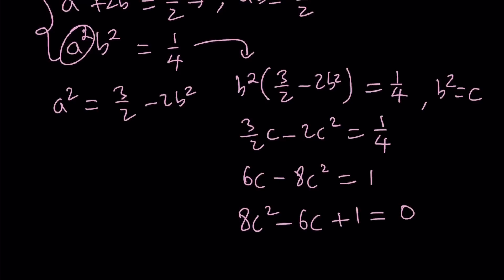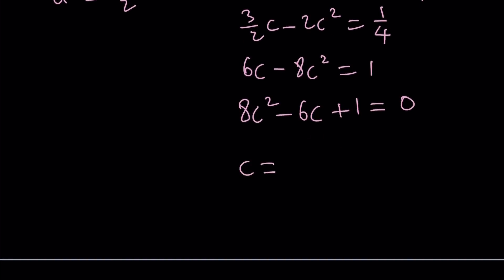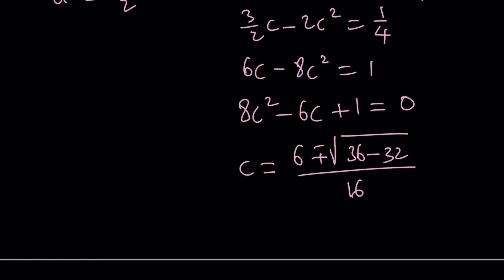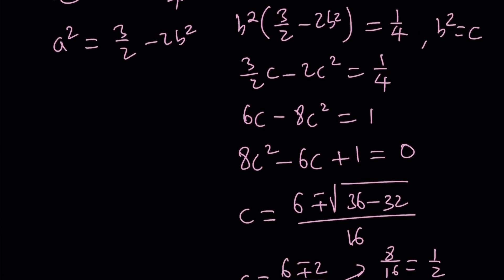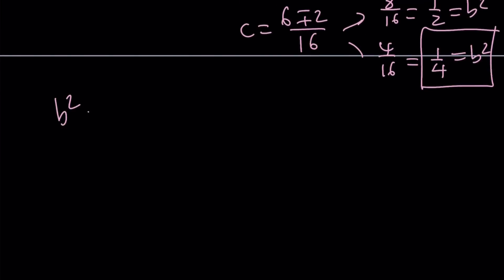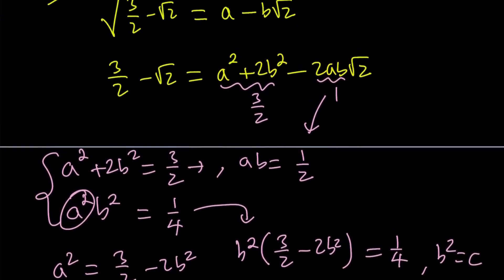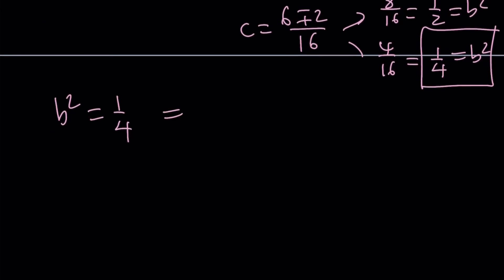From here we can find the c values, set them equal to b squared, find the b values, and then the a values. Using the quadratic formula: c equals 6 plus or minus the square root of 36 minus 32, divided by 16. Since 36 minus 32 is 4 and the square root of 4 is 2, this becomes c equals 6 plus or minus 2 divided by 16, giving us either 1 half or 1 fourth. We're looking for rational numbers, and the only value that gives us rational b is b squared equals 1 fourth, so b equals 1 half.